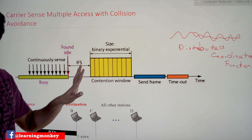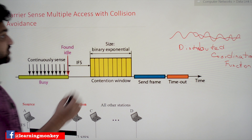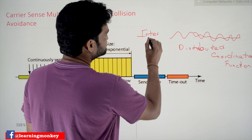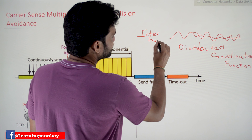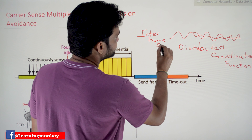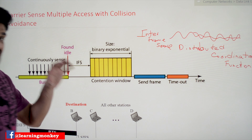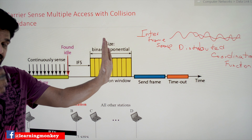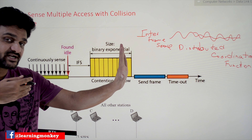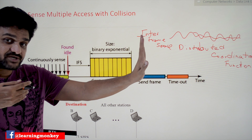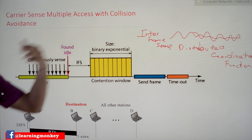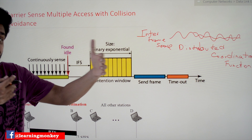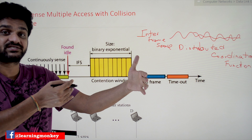IFS means Interframe Space. It is the amount of time taken for the data transmitted by that particular station to travel from the sender to the receiver.